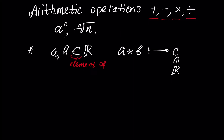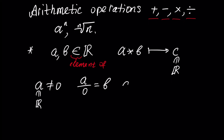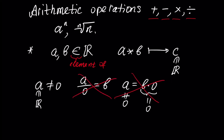The only exception is division by zero, because in mathematics, dividing a number by zero is meaningless. If we assume a is a non-zero real number and we write a over zero, and assume this equals b, then multiplying both sides by zero gives a equals b times zero. But the left side is not zero while the right side is zero. That's why division by zero is a meaningless operation.